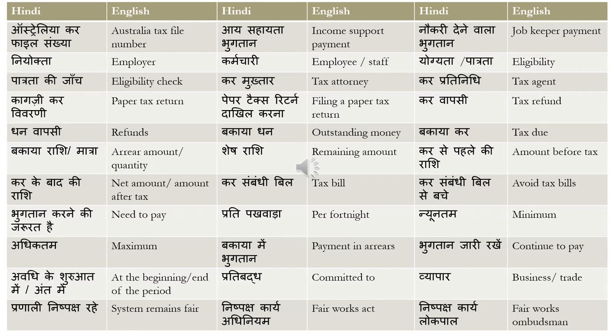The Services Australia department will pay income support payment to eligible employees — that is 'I sahayata bhutan.' Here 'I' means income. You can also use 'amdani,' but 'I' is the better word to use since 'amdani' translates more to 'earning.' So we prefer to avoid that word, but if you're not able to recall anything, you can use 'amdani.'